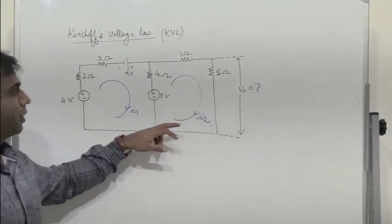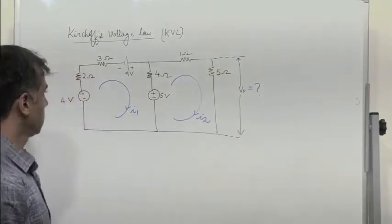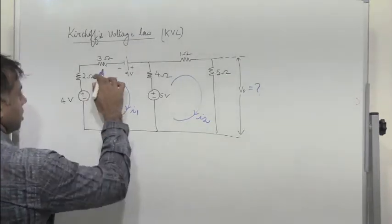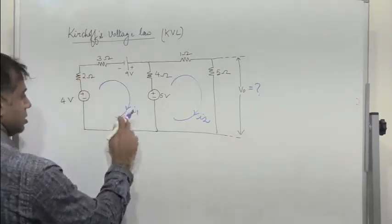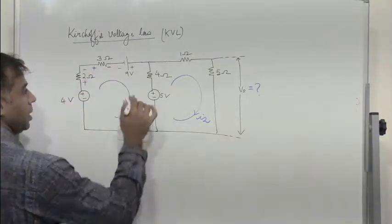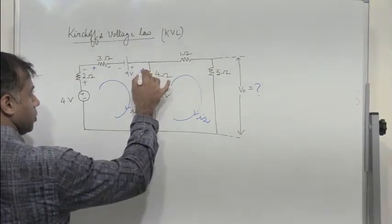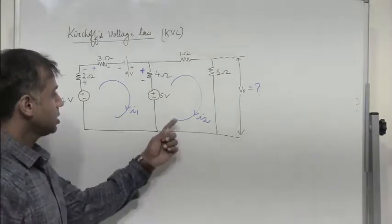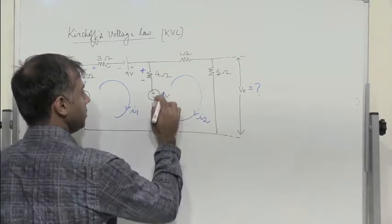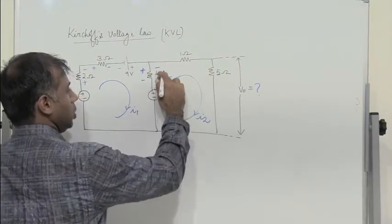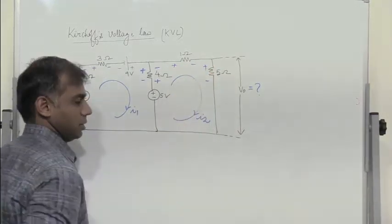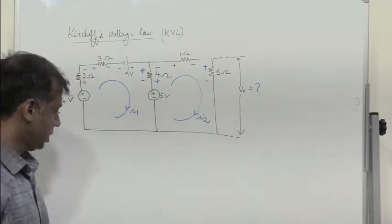In the next circuit, we need to find voltage V0. The first loop has current I1 and the second loop has current I2, both flowing clockwise. For loop 1, current flows left to right through the resistors marking plus to minus across each, and through the shared 4 ohm resistor with I1 flowing from A to B while I2 flows from B to A. For loop 2, current I2 flows clockwise.